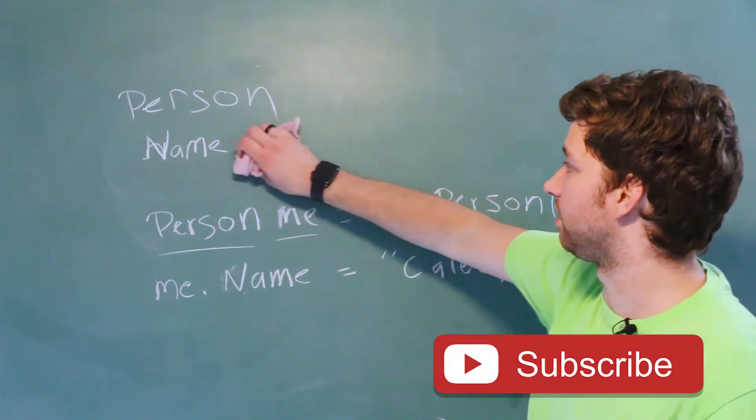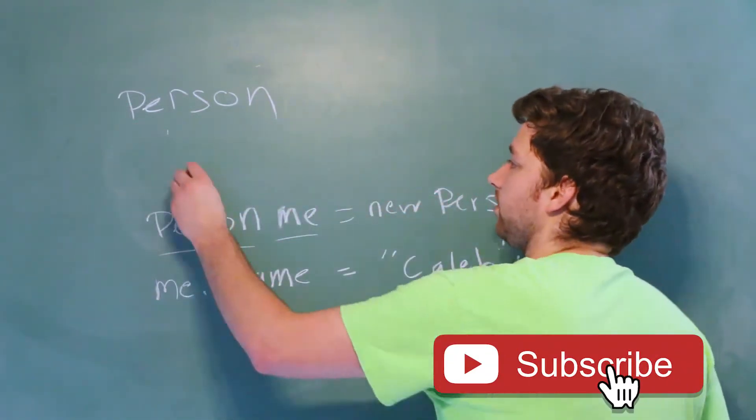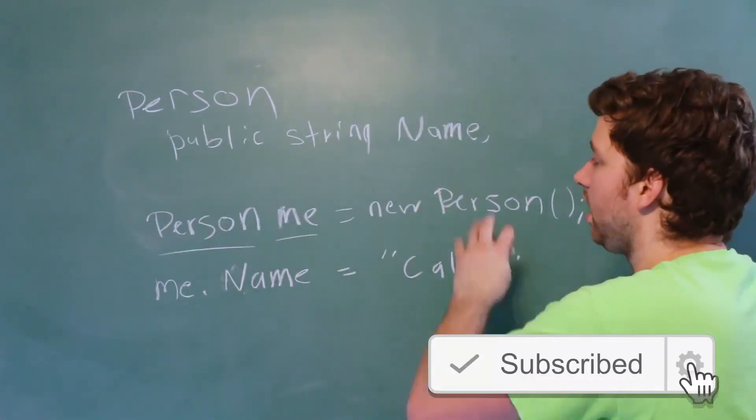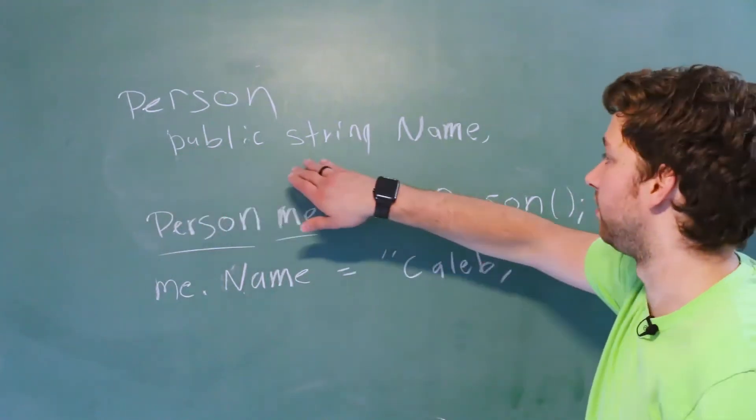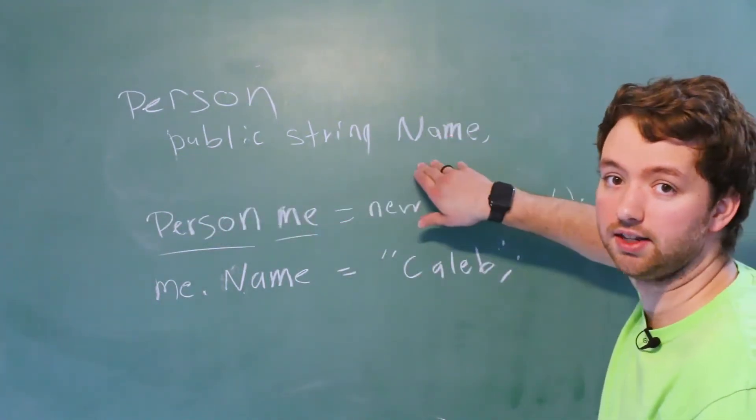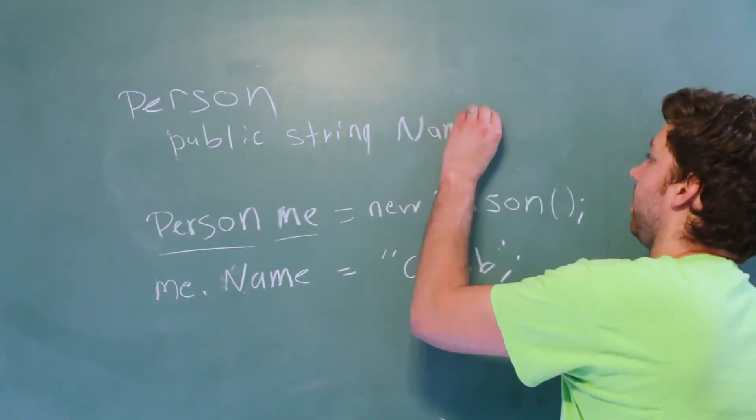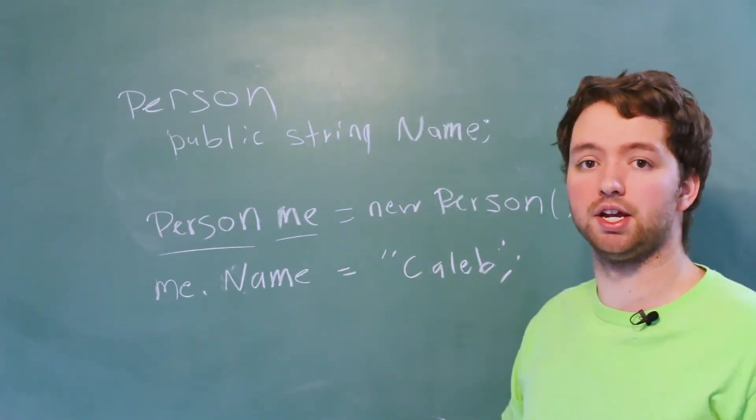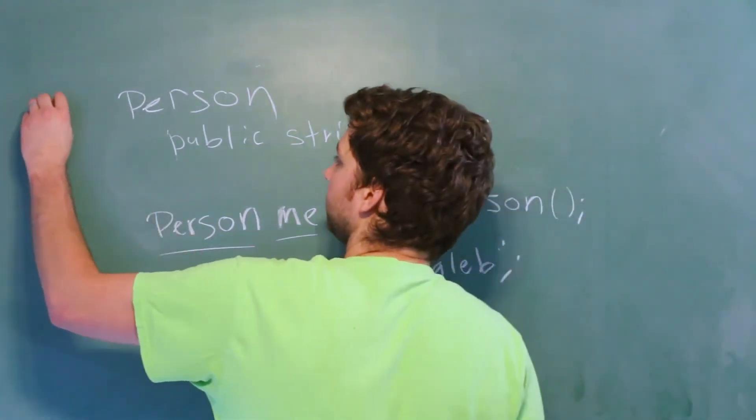Public string name. So basically we say it's public. We give it a type and we give it an identifier. In this case the identifier is name. This is going to be within a class definition so it might look like this. Public person.